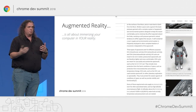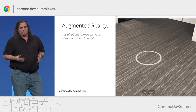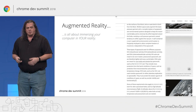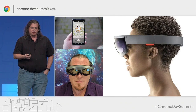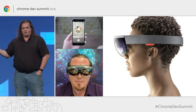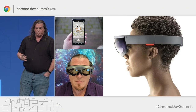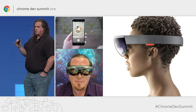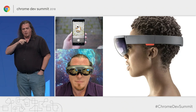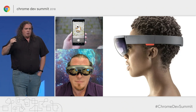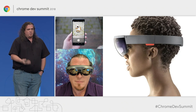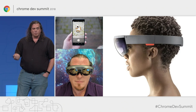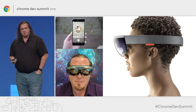Instead of trying to totally replace your reality, we really want computers to convincingly blend virtual and real experiences. For AR, there are headsets like the HoloLens and the Magic Leap 1, as well as projection systems to display on real-world surfaces. But most users will probably first experience AR using a camera pass-through experience on a mobile device, showing things like AR stickers.